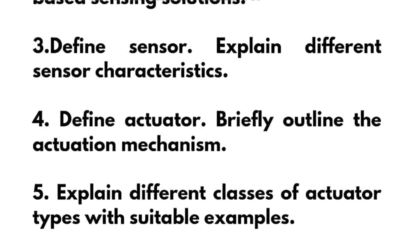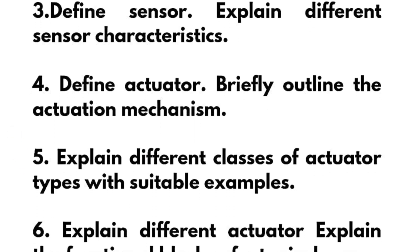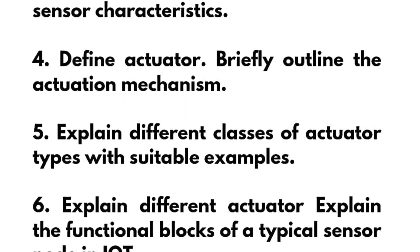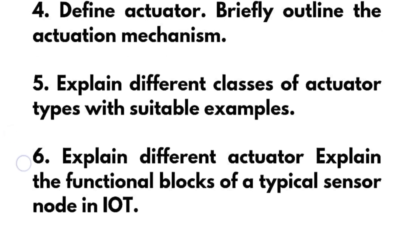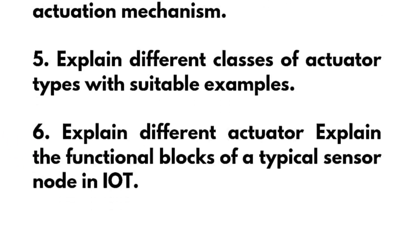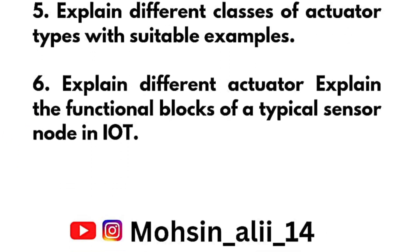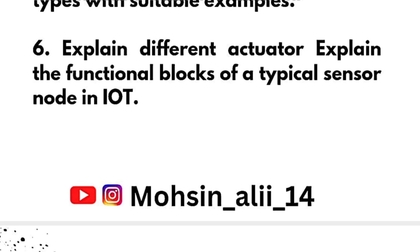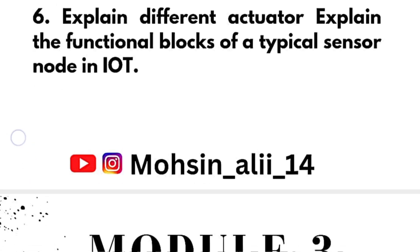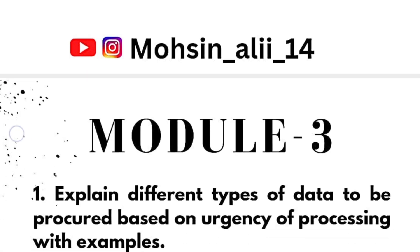Also in Module 2: define an actuator, briefly outline the actuation mechanism, and explain different classes of actuator types with suitable examples. The last question is to explain the functional blocks of a typical sensor node in IoT.